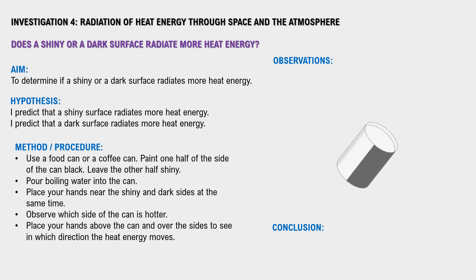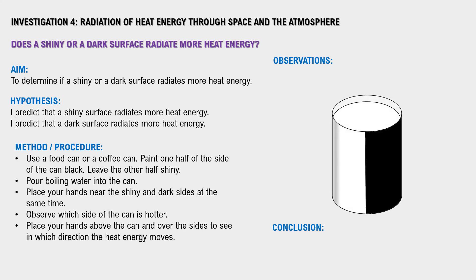To conduct this investigation, you will need a food can or a coffee can. Paint one half of the side of the can black and leave the other half shiny. Pour boiling water into the can. Place your hands near the shiny and dark sides at the same time and observe which side of the can is hotter. Place your hands above the can and over the sides to see in which direction the heat energy moves.